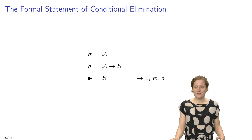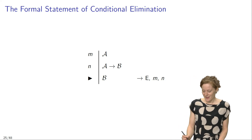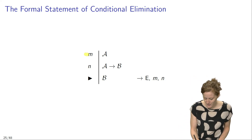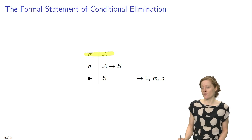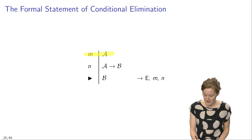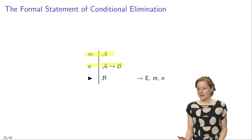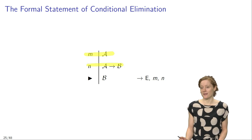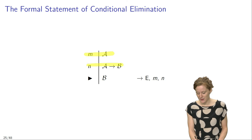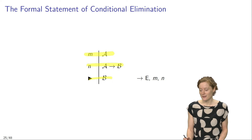Formally, modus ponens, or conditional elimination, looks like this. If in line M of your proof you have a sentence of the form A, and if in a different line N of your proof you have a conditional whose antecedent is A, then you can infer the consequent of that conditional — in this case B — and justify this inference by citing conditional elimination applied to lines M and N of your proof.